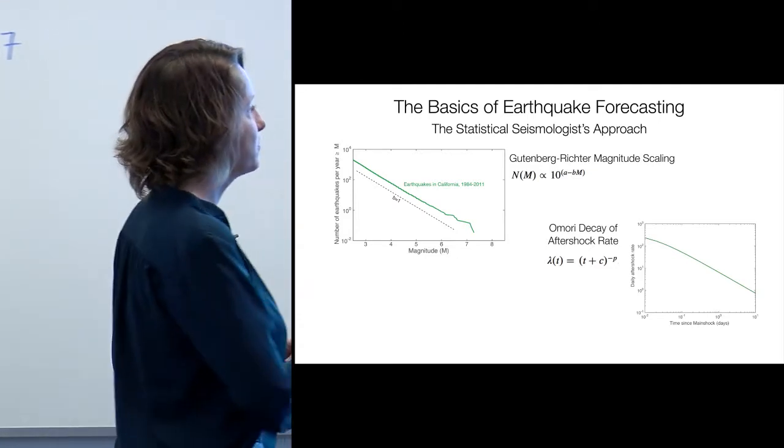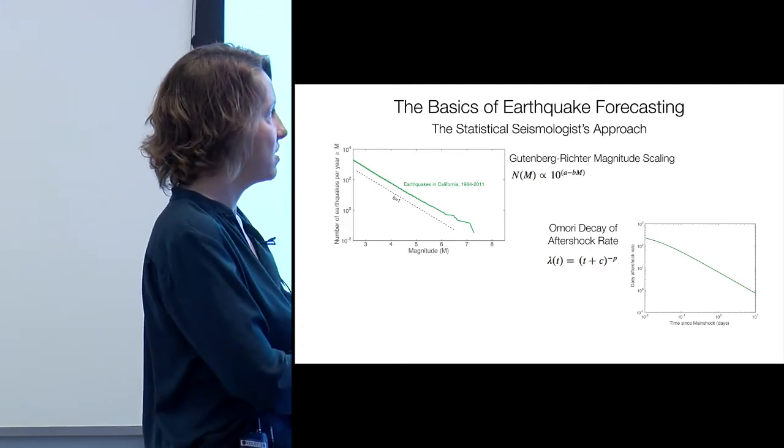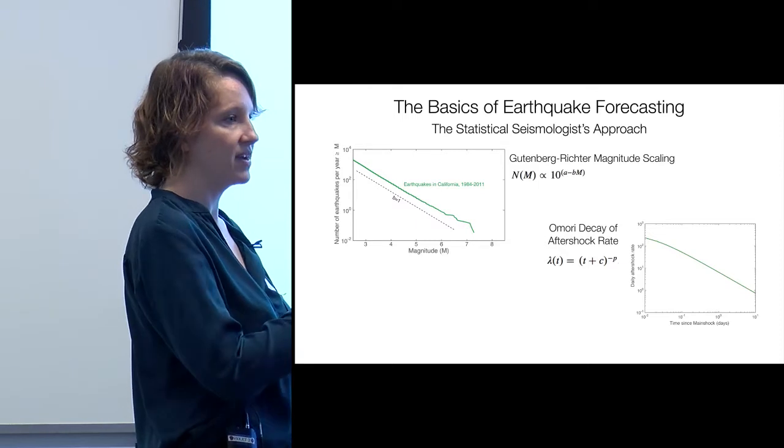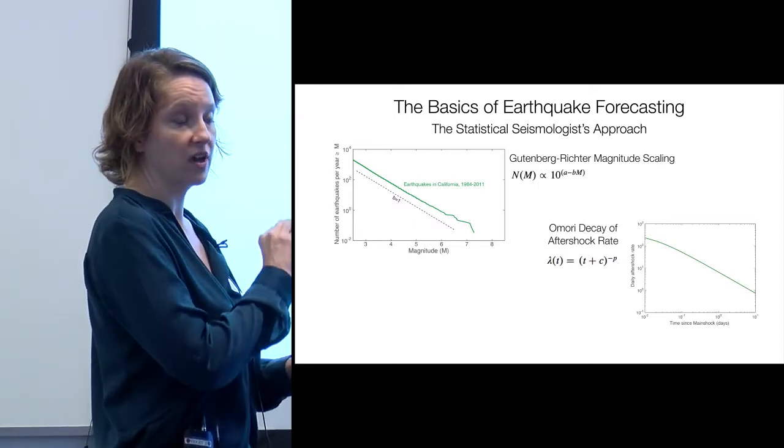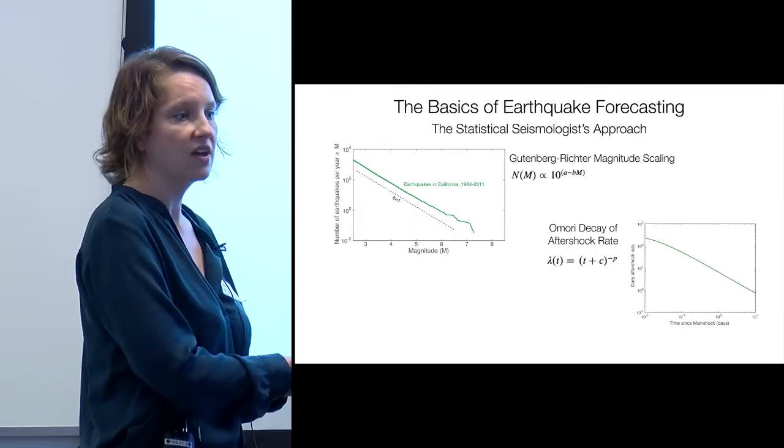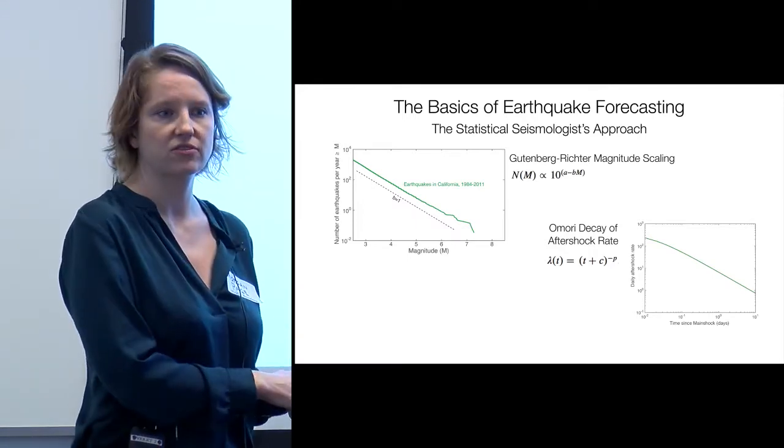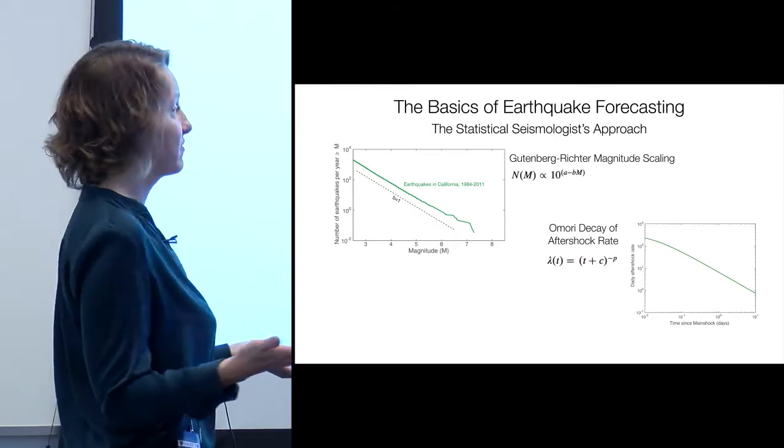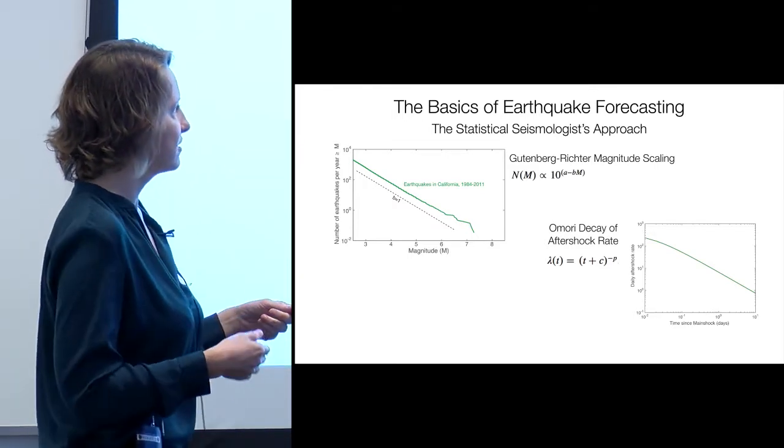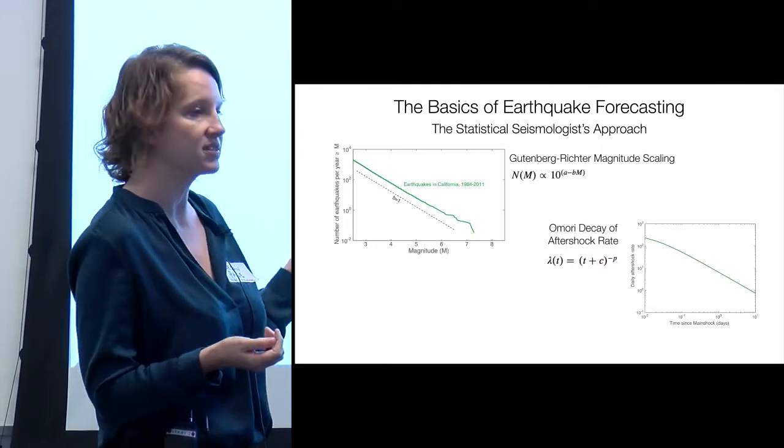The next most important scaling law is what's called Omori decay. This is showing how the rate of aftershocks decay in time. When an earthquake occurs, it typically triggers aftershocks. You get a lot immediately after the earthquake, and then they decay with time following a power law decay. The exponent is about one.